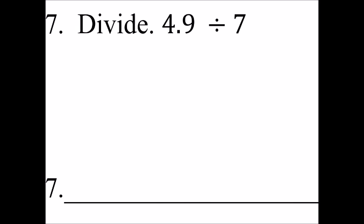4.9 divided by 7. Let's go ahead and get rid of that decimal so we can multiply some whole numbers. We're going to make that a 70. 49 divided by 70 is what we're looking at.